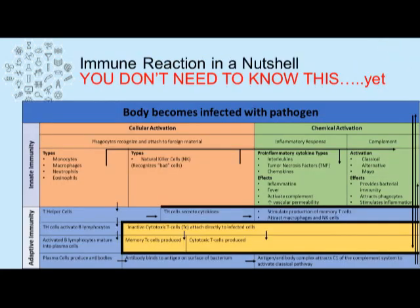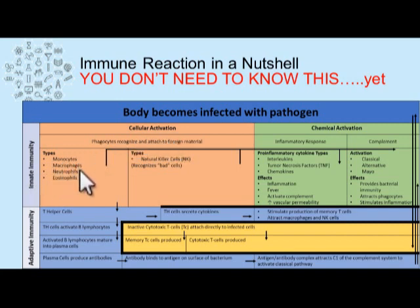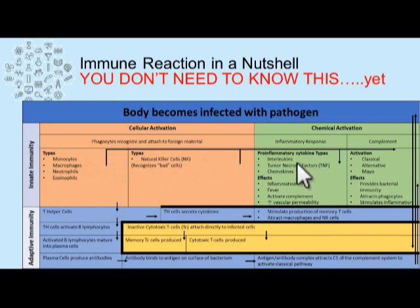To put everything together: the body becomes infected with a pathogen, triggering the innate immune reaction. The cellular component — monocytes, macrophages, neutrophils, and eosinophils — acts as phagocytes to attack the material. They release their granules, which include cytokines such as interleukins, tumor necrosis factor, and chemokines, producing inflammation, fever, activation of complement, and increased vascular permeability, which attracts more immune cells to the site of infection.